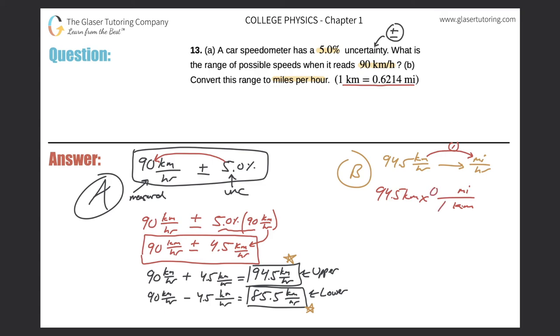So one kilometer, 0.6214 kilometers cancel. Just take that and plug it into the calculator. So 94.5 times 0.6214. Great. Get a value, I'm going to round slightly of 58.7 miles per hour.